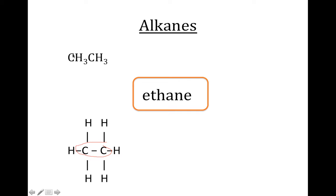Sometimes ethane is represented differently because it's easier to type out in a book. You would have to realize that the two carbons are actually bonded together, that three hydrogens are sticking on the outside, and the other three hydrogens on the other carbon. Sometimes a book will even go H3C, then another C-CH3, and that'll show that the carbons are indeed connected.